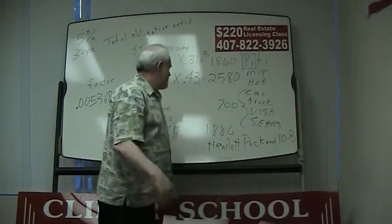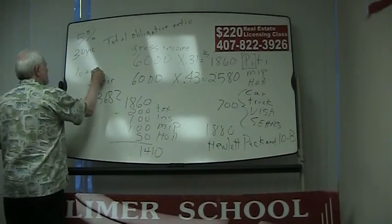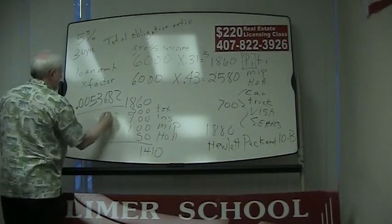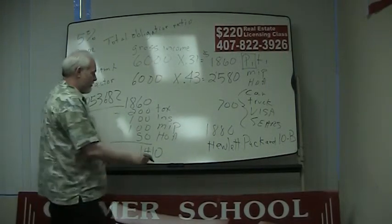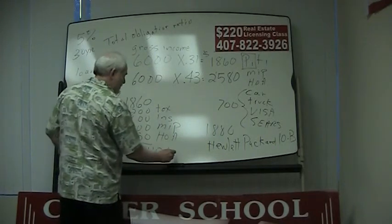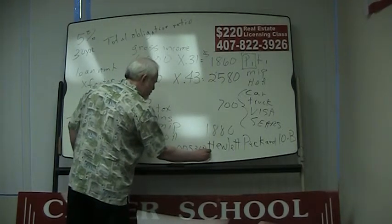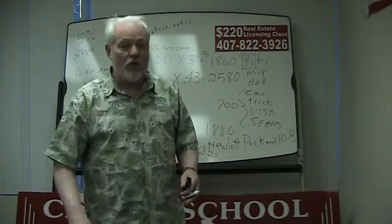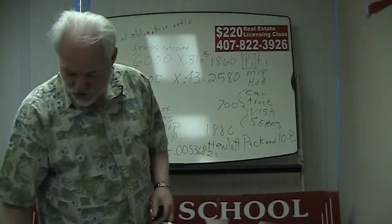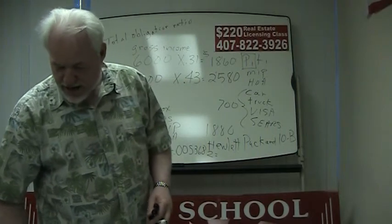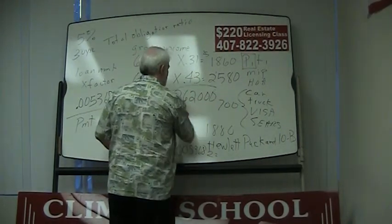You can do that to compute payments. You take this factor times the loan amount, and that's going to give you your payment. In our case, we've already got a payment of $1,410 a month. You can divide that by the factor of 0.0053682, and that will tell you how much mortgage you can qualify for. My calculator says you can qualify for a $262,000 house.